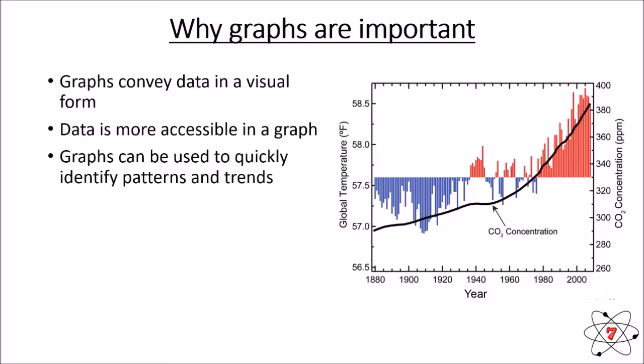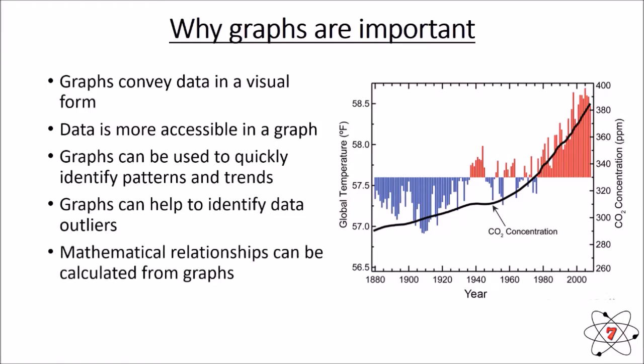Graphs also help to identify patterns and trends, and it's far faster to do this in a graph than it is just with raw data. And we can also identify data outliers. Data outliers are points that don't fit a pattern, perhaps results that are incorrect. Again, it's easier to do this in a graph than it is just with the data on its own. And finally, we can identify a lot of mathematical relationships from our graphs.